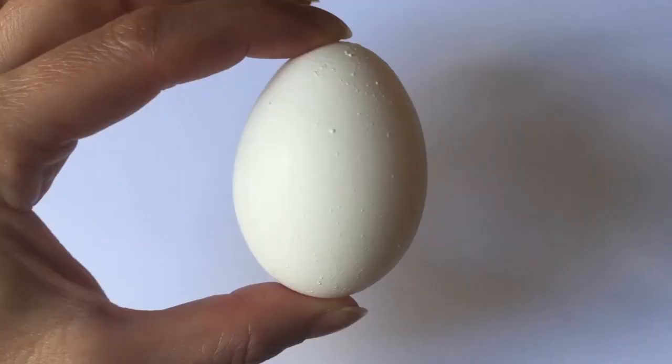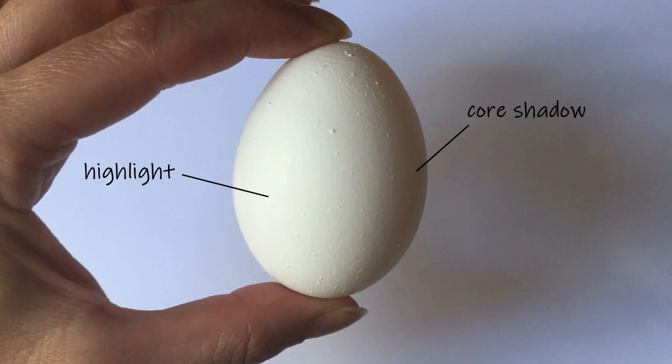Now let's talk about the areas of light and shadow themselves. The brightest area of the egg, where the light shines, is called the highlight. The dark side, where the light doesn't reach, is called the core shadow. And there's an in-between area called the mid-tone or the half-tone.